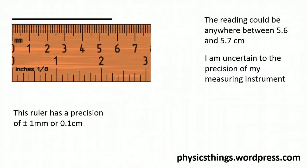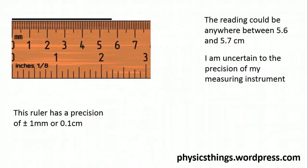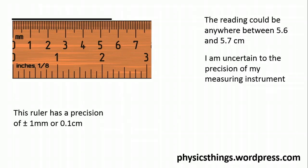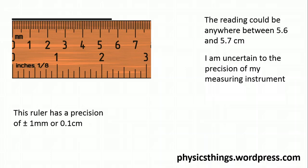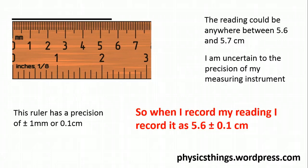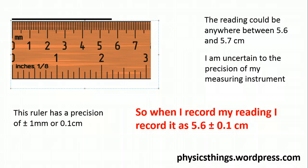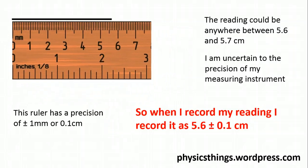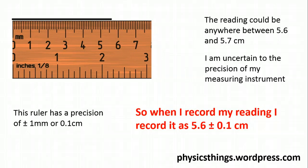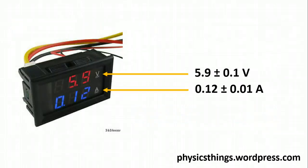This ruler here measures to the nearest one millimeter. And for our exam board, AQA, you state that the precision of an instrument is plus or minus the smallest measurable interval. So for this one here, I would record it as 5.6 plus or minus 0.1 centimeters, or one millimeter, as that is the smallest measurable interval.